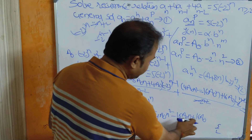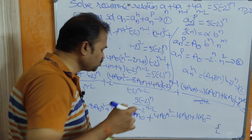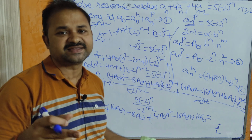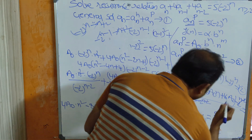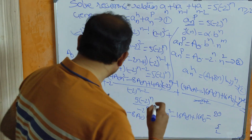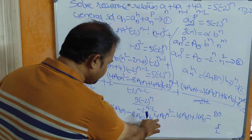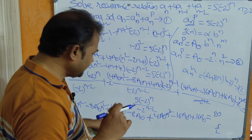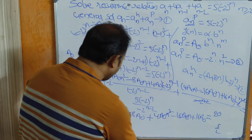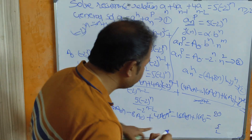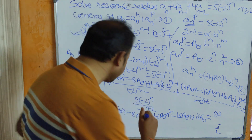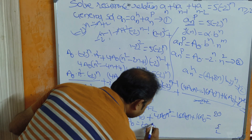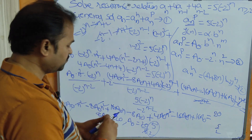So we are left with 8a₀ = 5·(-2)² = 5·4 = 20. Therefore a₀ = 20/8 = 5/2. Substituting a₀ back into equation 3: aₙᵖ = (5/2)·(-2)ⁿ·n².